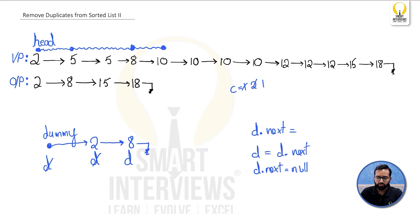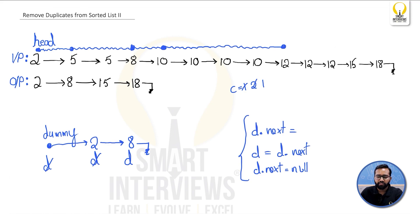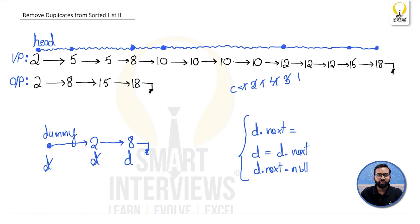Continuing from the current position, we check how many times 10 is repeated. Once we stop, the count is 4, so we do not add 10 to the output linked list. Similarly, 12 is repeated three times so we do not add it. Then 15 is repeated once, so the count is 1 and we should add it to the linked list.